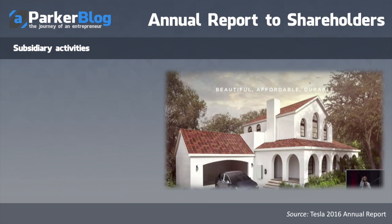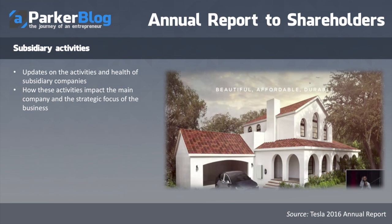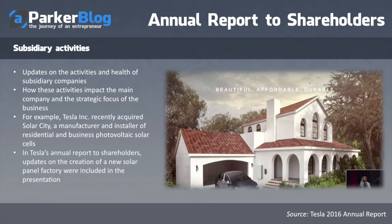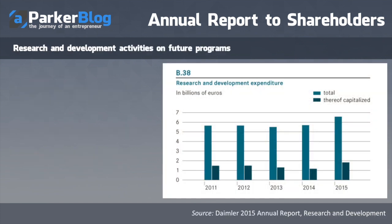Next are subsidiary activities. Some big companies own other companies — subsidiaries — and they give updates on those. For example, Tesla acquired SolarCity, and one of the slides shown here is from Tesla's annual report to shareholders featuring their new solar roof. They cover how these subsidiary activities impact the main company and make that connection clear.